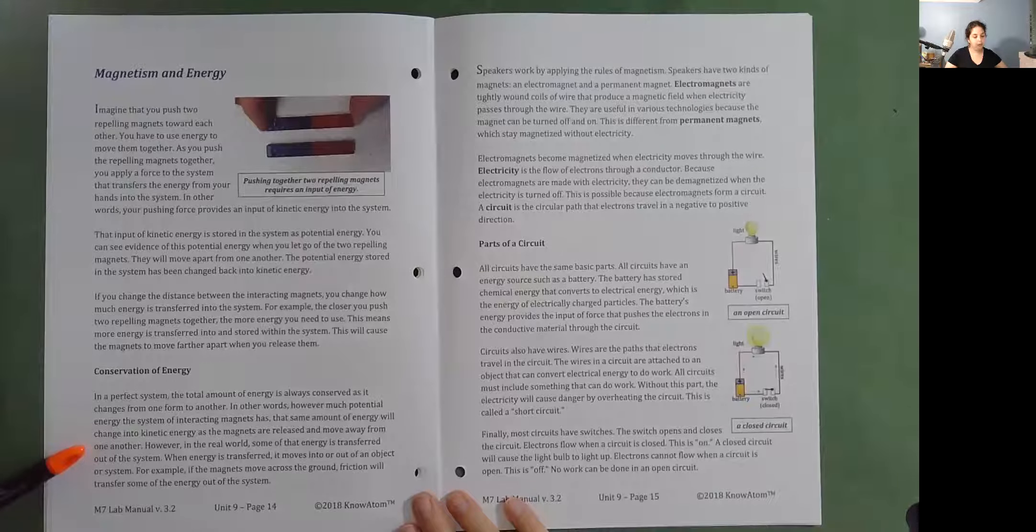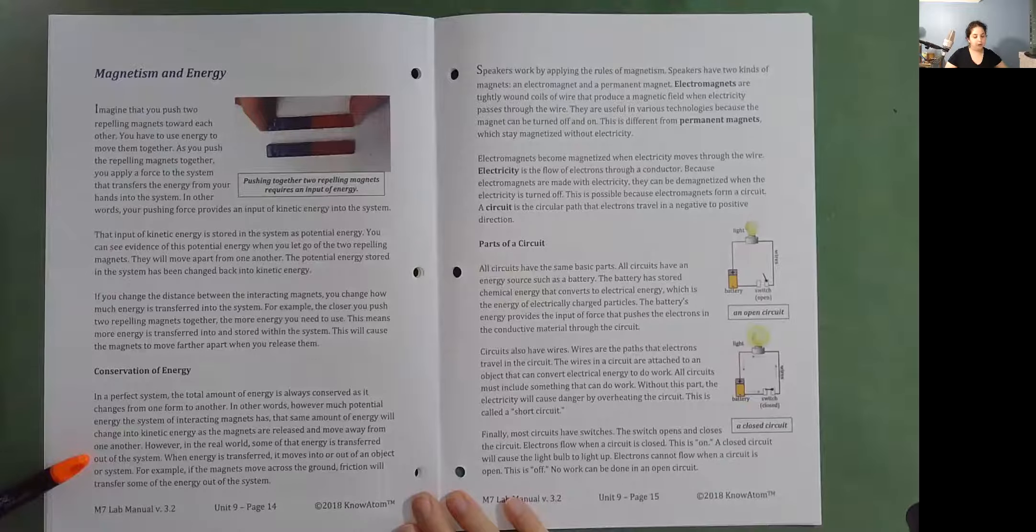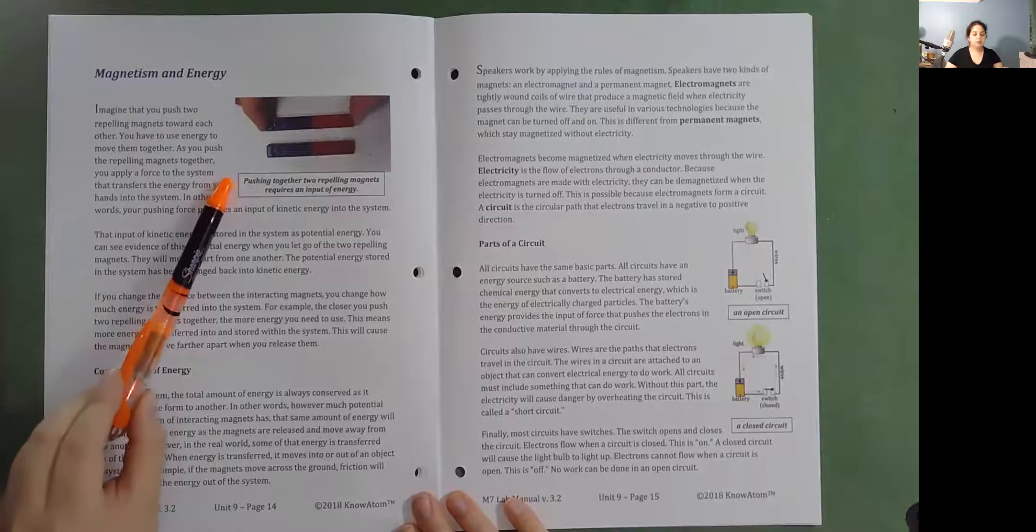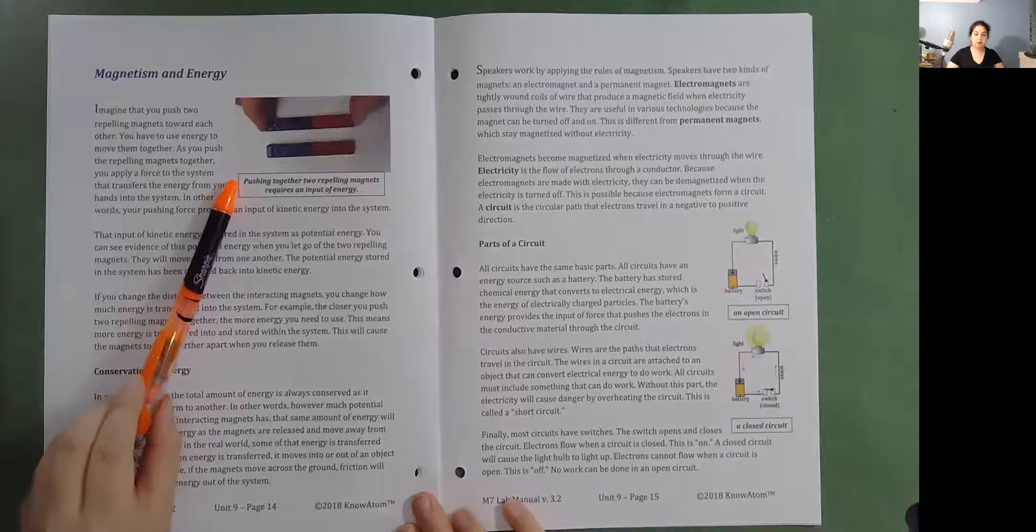However, in the real world, some of that energy is transferred out of the system. When energy is transferred, it moves into or out of an object or system. For example, if the magnets move across the ground, friction will transfer some of the energy out of the system. Pushing together two repelling magnets requires an input of energy.